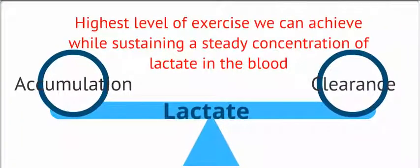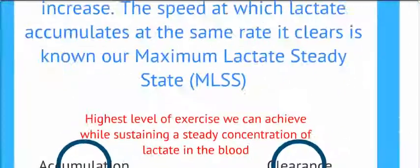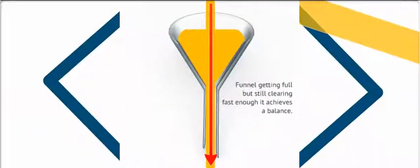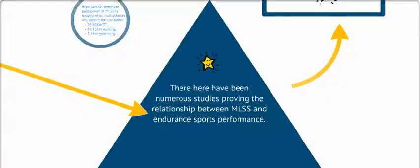This is the higher level of exercise we can achieve while sustaining a steady concentration of lactate in the blood. Therefore, while the funnel is getting full, it is still clearing fast enough that it is not spilling yet. And this matters because there is a relationship between maximum lactate steady state and endurance performance.